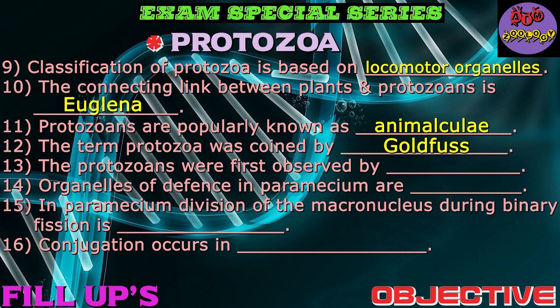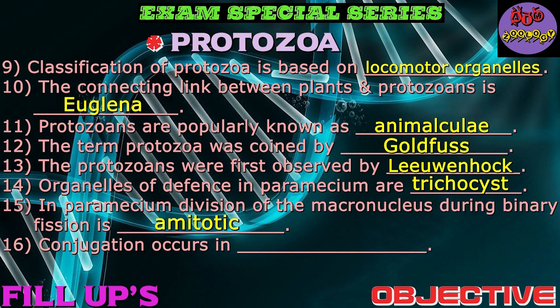Question number thirteen: The protozoans were first observed by Leeuwenhoek — very important. Question number fourteen: Organelles of defense in Paramecium are trichocysts. Question number fifteen: In Paramecium, division of the macronucleus during binary fission is amitotic. Question number sixteen: Conjugation occurs in Paramecium — there is only one organism, that is Paramecium.